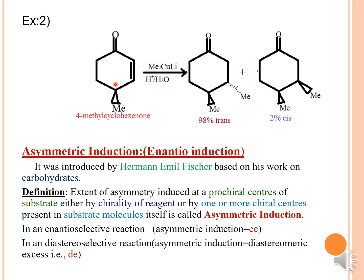Moving on to the next example: if you take 4-methylcyclohexanone and treat it with dimethyl lithium cuprate, followed by hydrolysis, you will result in two products — trans and cis. Trans is your major product at 98% and cis is your minor product at 2%.